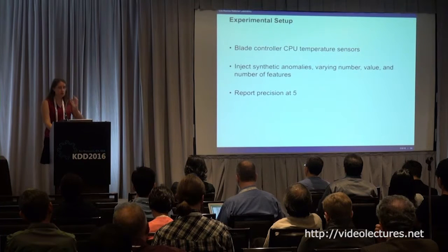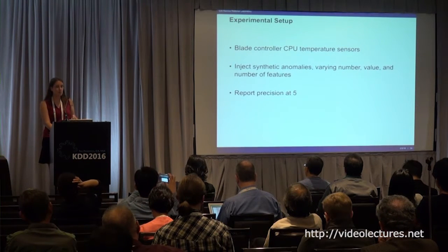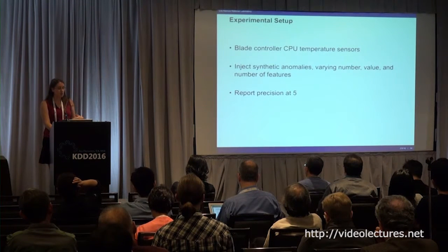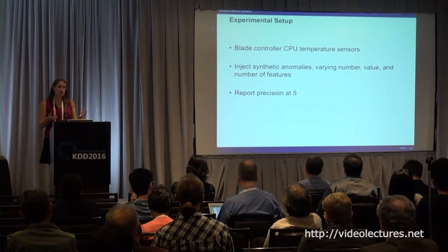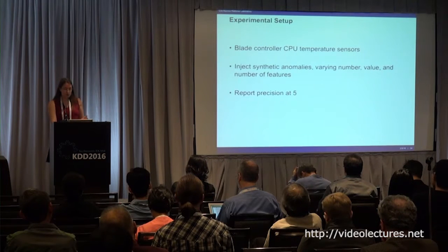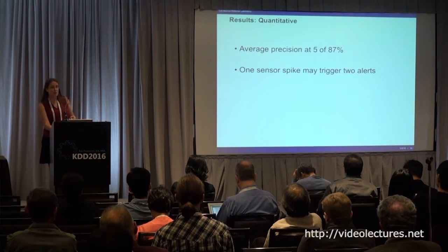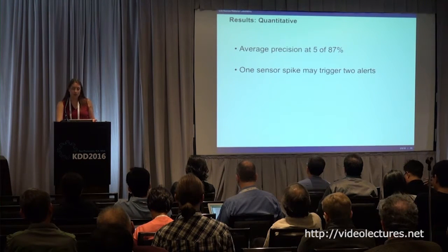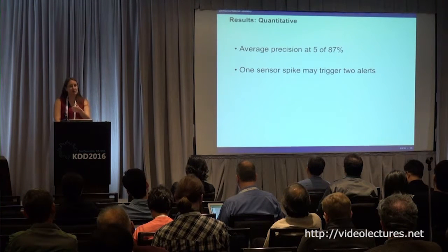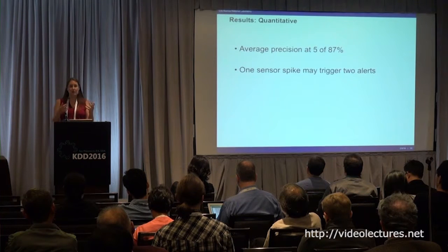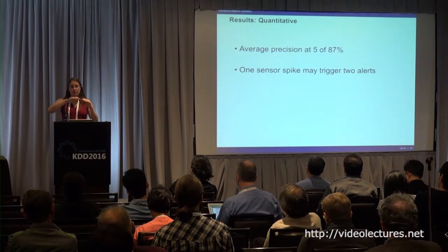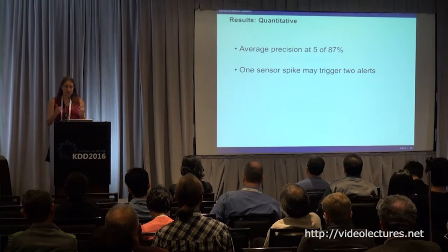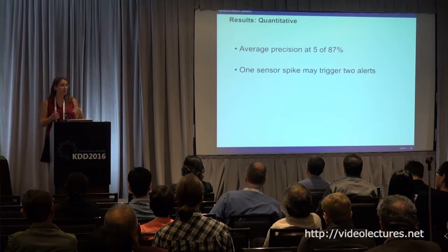We ran some experiments on data from Trinity, specifically on the blade controller CPU temperature sensors. We injected a few synthetic anomalies, varying the number of anomalies, the values making a data point anomalous, and the number of features — meaning the number of sensors giving an injected anomalous reading. We report precision at five. We get an average precision at five of 87% on these injected anomalies, which is pretty good. We also notice that one spike in a sensor can trigger two alerts because we include temporal features — both raw features and the deltas between each time step — so the delta going up and coming back down can cause two alerts.